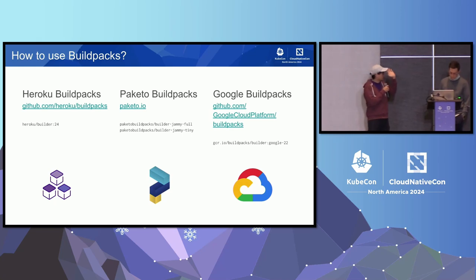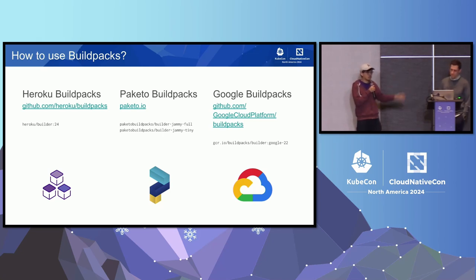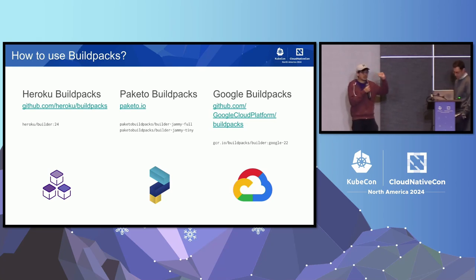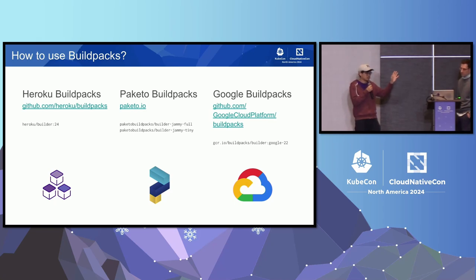There are a bunch of BuildPack providers that have built BuildPacks. Heroku makes a set of BuildPacks over the six language ecosystems we support — Ruby, Node, Java, PHP, Python, et cetera. There's the Paketo project, which came out of VMware — an open source project that a bunch of companies use as well. Google also has a set of BuildPacks. You can just specify the builders and it will automatically detect what language you're using, so you can hit the ground running.